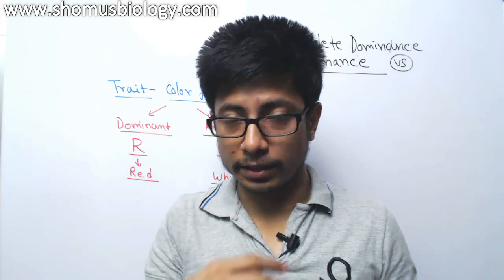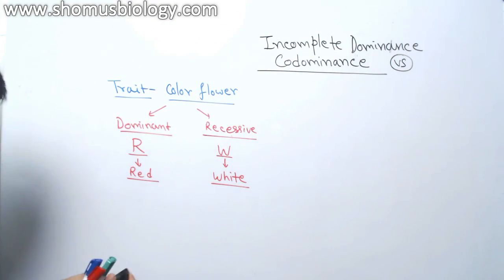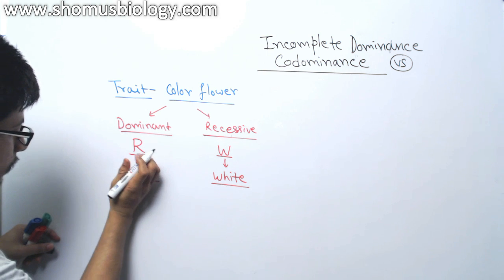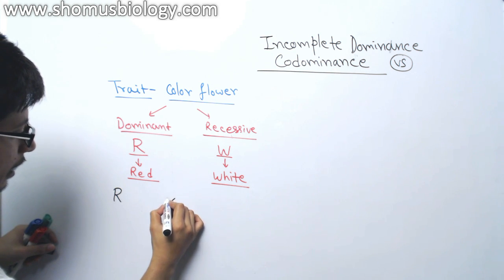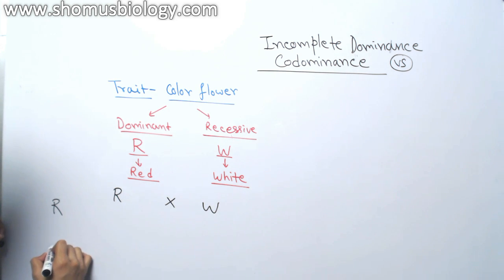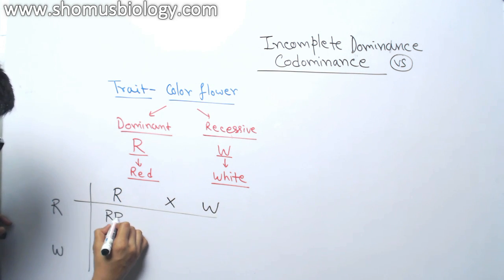But if you look at here, what is the difference? We will see. Here we have, let us say R W, say R and W is crossed. This is a monohybrid cross. So what we get after this cross.